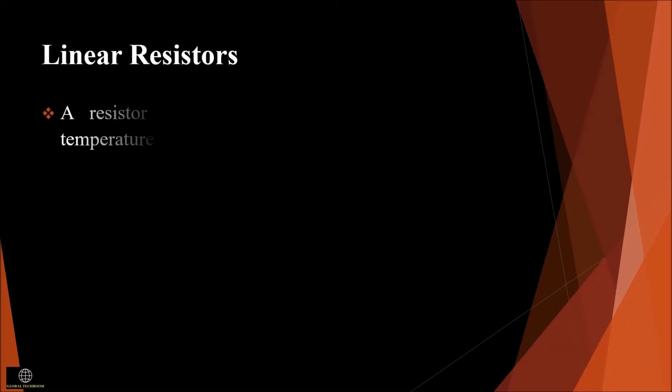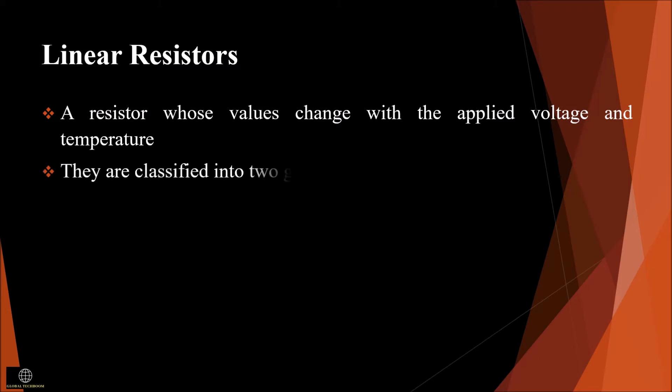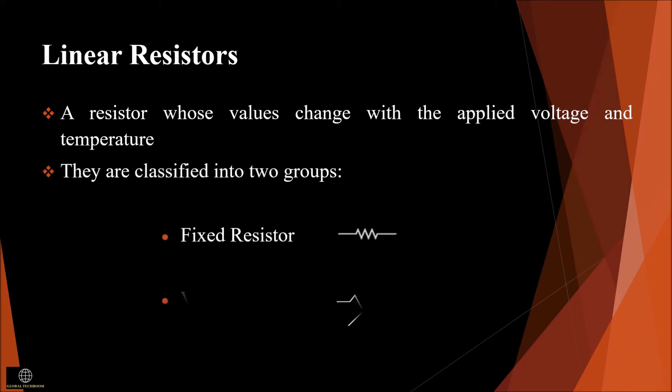A resistor whose values change with the applied voltage and temperature — i.e., the current is directly proportional to voltage — is called a linear resistor. They are classified into two groups: fixed resistors and variable resistors. The symbols representing the fixed resistor and the variable resistor are shown here.